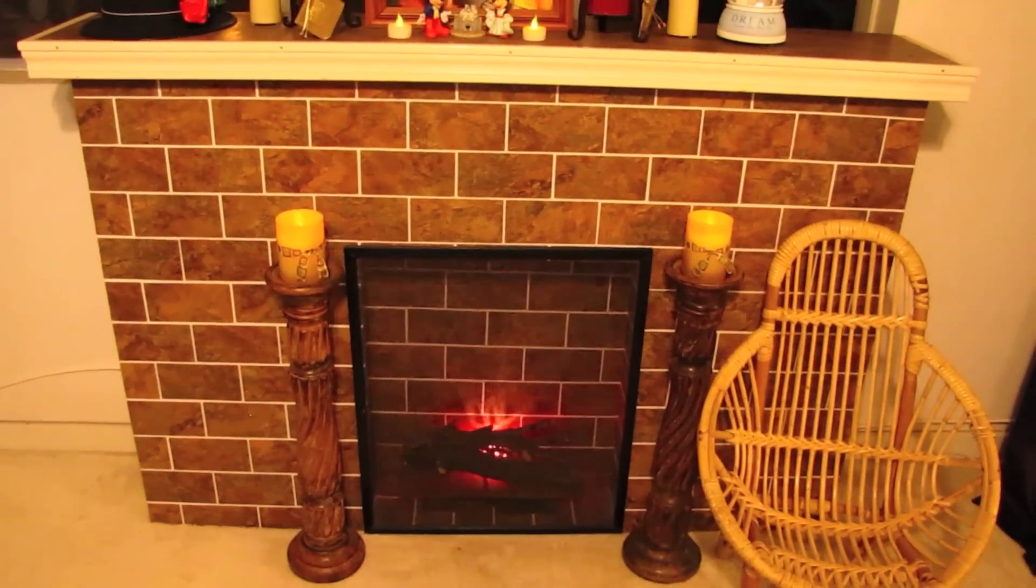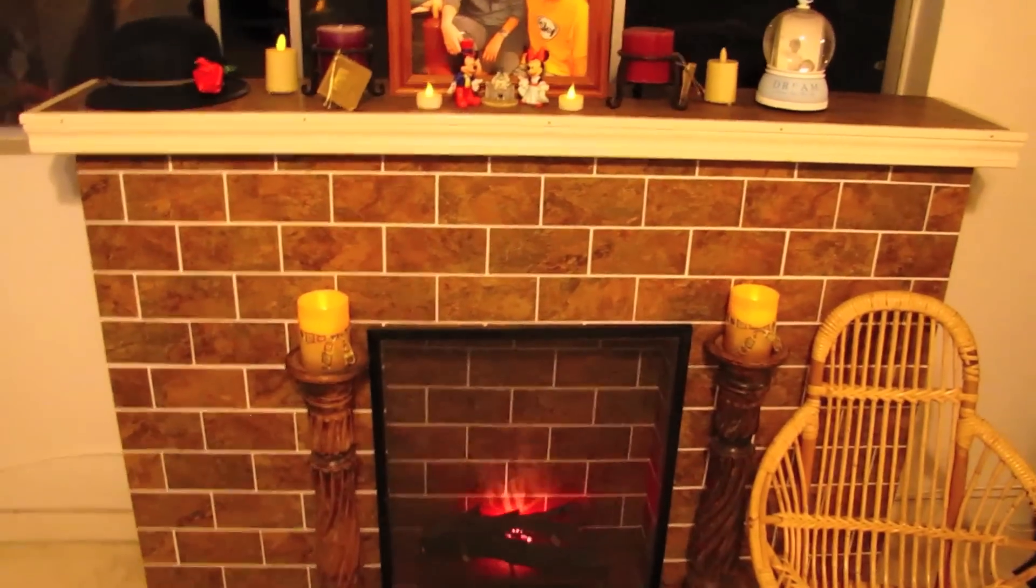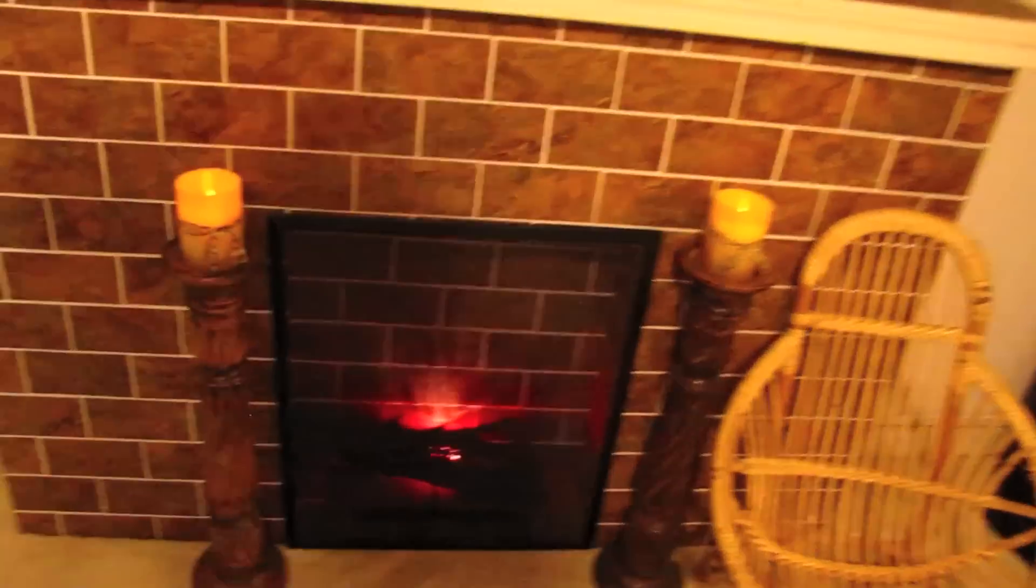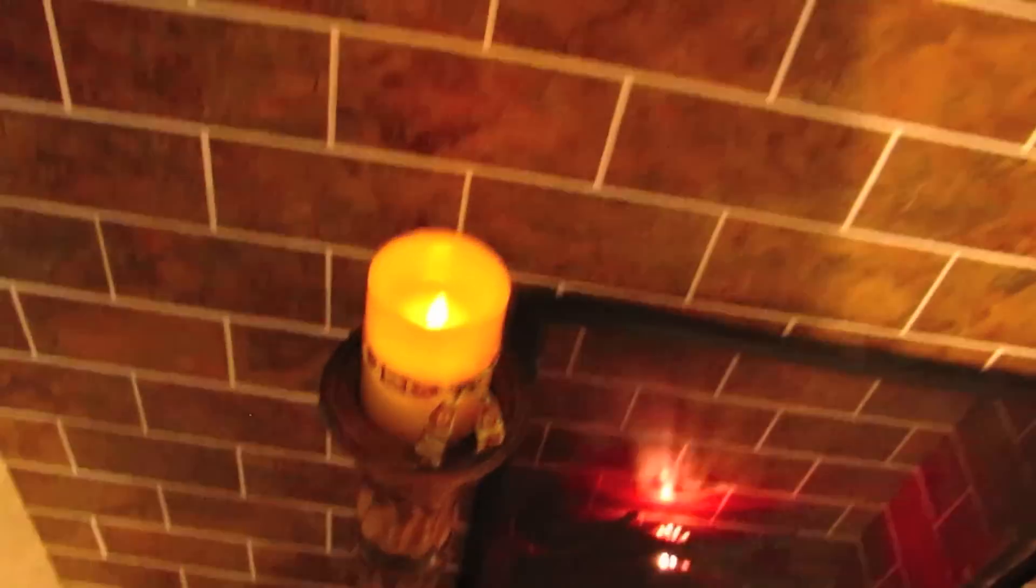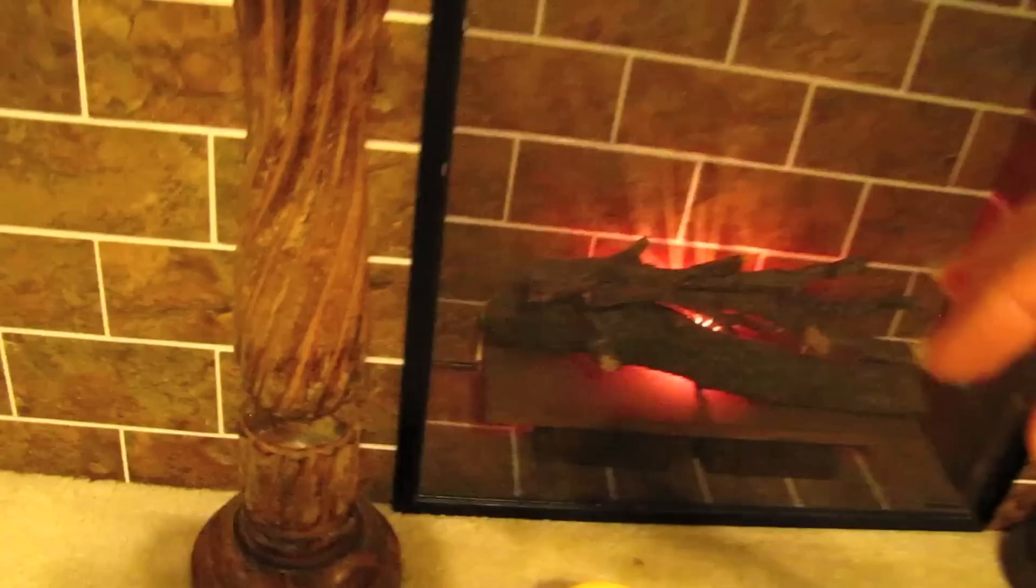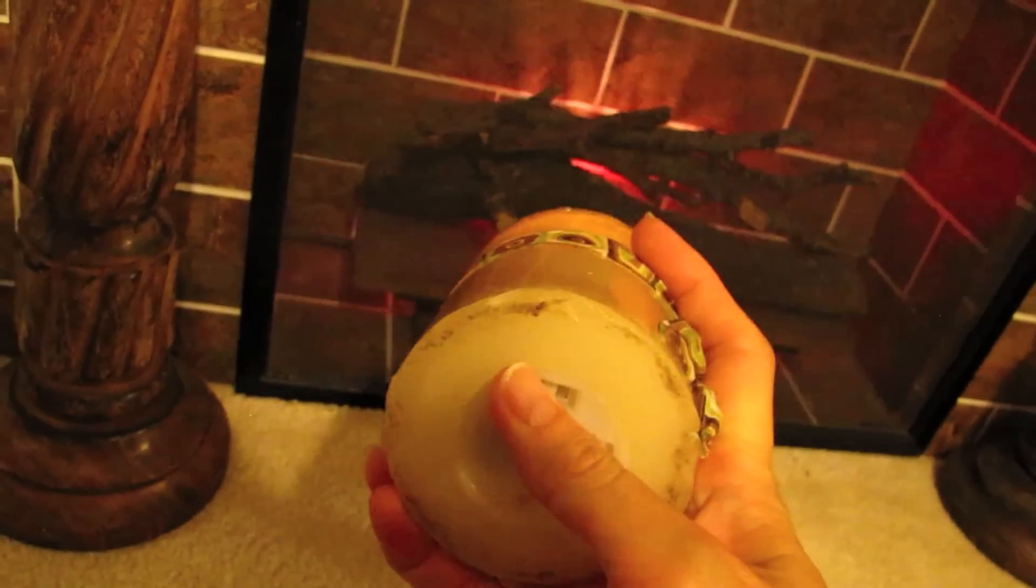If I remember correctly, the entire project cost about $50 to $60 in materials. The most expensive part was actually those two candelabras in the front. I got those at Ross for like $18 each. I got these candles from Walgreens. They were about $6 each.